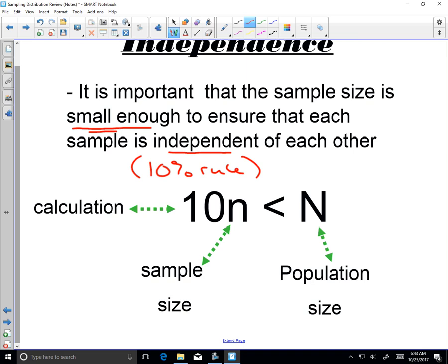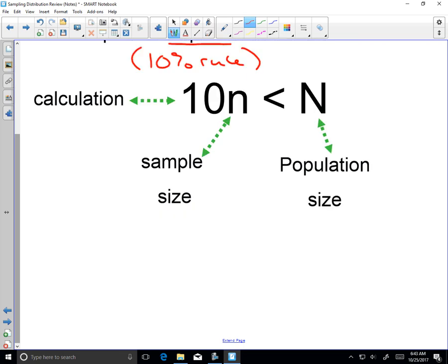Now, the formula that we use to verify the 10% rule for independence is this 10n is less than capital N. Our sample size times 10 is less than the population size.